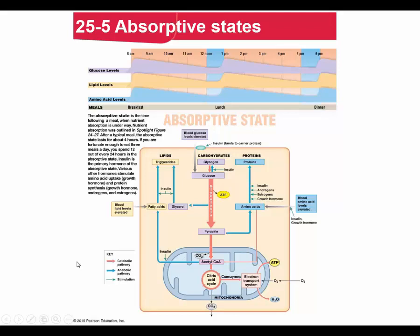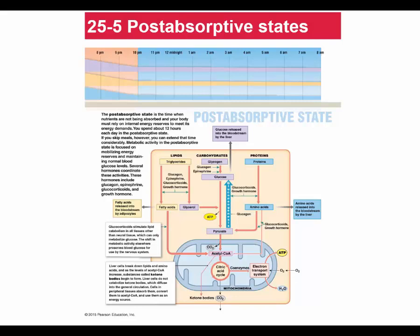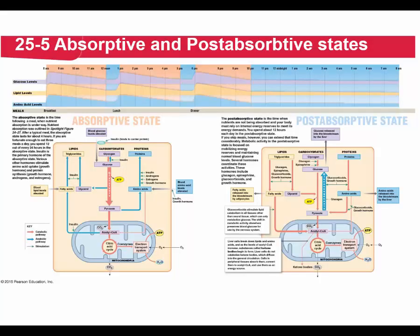To recap: the absorptive state is right after a meal — insulin rules, driving glycogen synthesis, lipogenesis, and protein synthesis. The post-absorptive state is between meals — glucagon and epinephrine adjust blood sugar via glycogenolysis, and cortisol and growth hormone turn on glucose-sparing pathways like lipolysis and protein degradation. That's the absorptive and post-absorptive states.